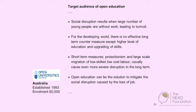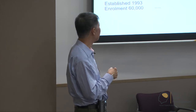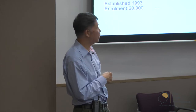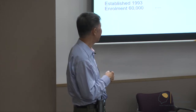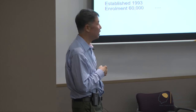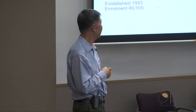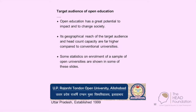Around 2 billion jobs are at high risk of disappearing due to automation in the coming decades. Social disruption results when large numbers of young people without work lead into tomorrow. For the developing world, there is no effective long-term countermeasure except higher levels of education and upgrading of skills. Open education has great potential to change society.